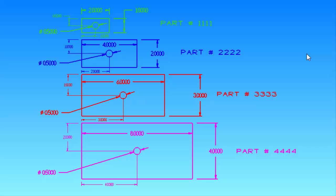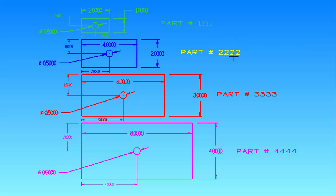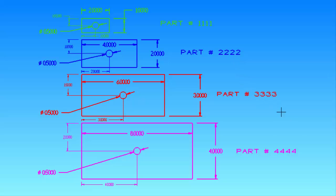Here's a basic example of how to write a parametric program for a part family. I have drawn four parts that would be considered a part family: part number 1111, 2222, 3333, and 4444.